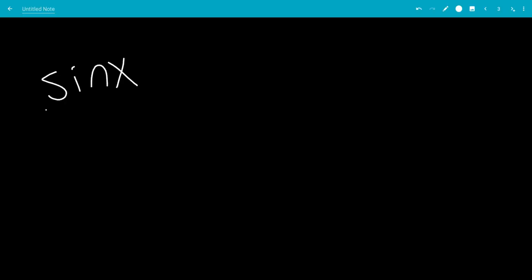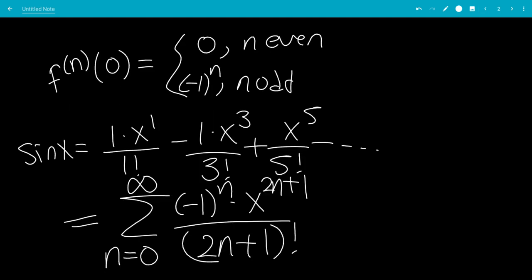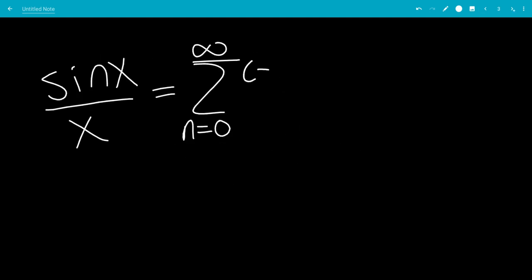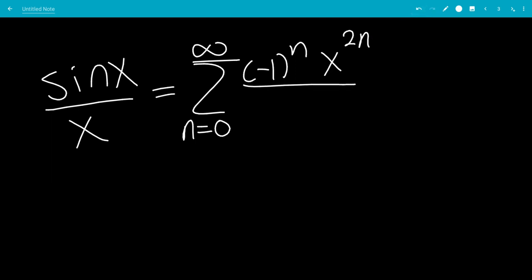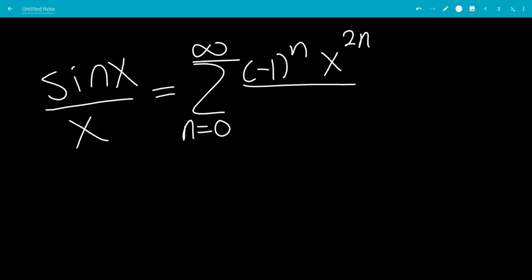So sine x over x will be the sum from n goes from 0 to infinity of negative 1 to the n. Originally it was x to the 2n plus 1, but we're dividing by x, so it'll be x to the 2n, over (2n plus 1) factorial.